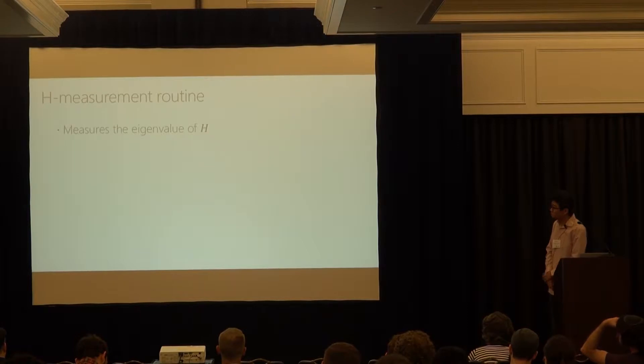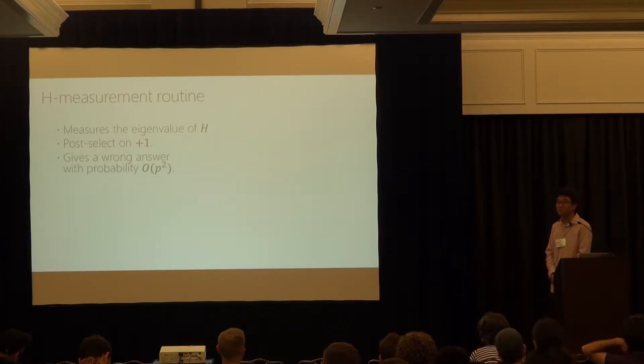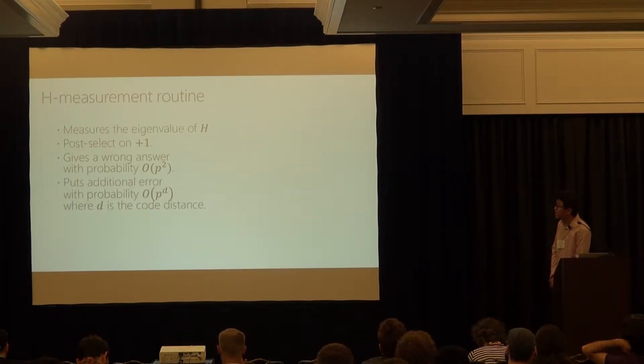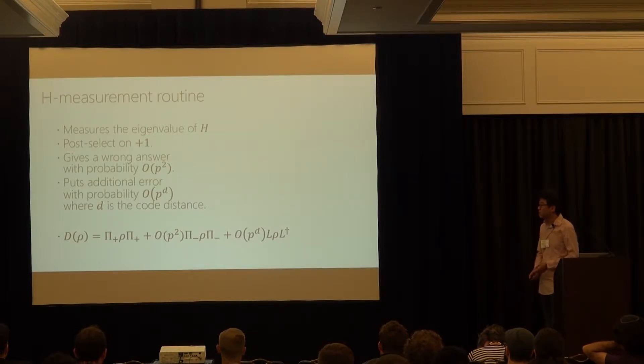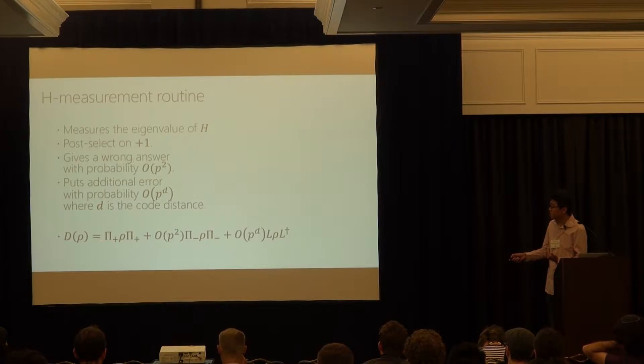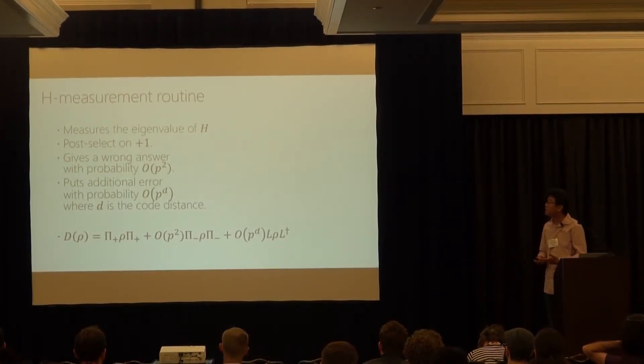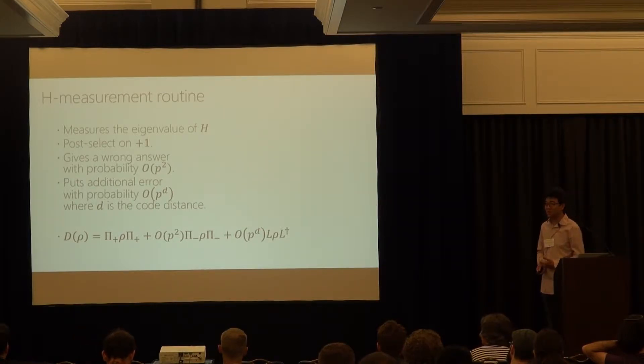So more generally, yeah, I'm just recapping what I said. You want to measure the eigenvalue of the Hadamard post select on plus one. And this circuit guaranteed to give you a wrong answer with a certain probability that doesn't scale with the code distance of your choice. So it has some probability to be wrong. And it also has, it also corrupts your original state with a much smaller probability, but non-zero that depends on the code distance of your choice. So in a quantum channel notation, I can write this way. The rho is your input state, pi plus is the projection onto the plus one eigenstate of Hadamard and minus is the minus one eigenstate. So this is what I wanted. This is inherently faulty wrong outcome. And this is contamination from the error correcting code. This can be made arbitrarily small by increasing code distance. This is intrinsic. So you have to repeat your measurement to increase your fidelity to your measurement outcome.